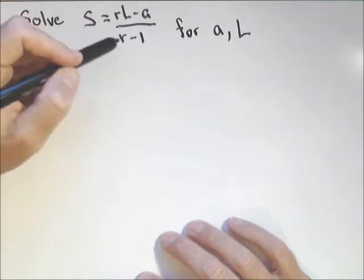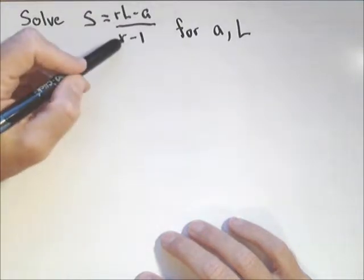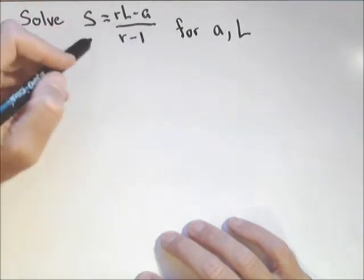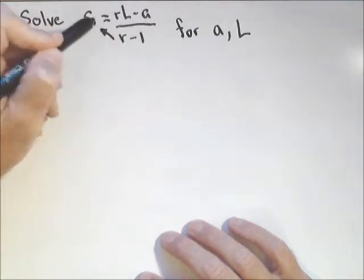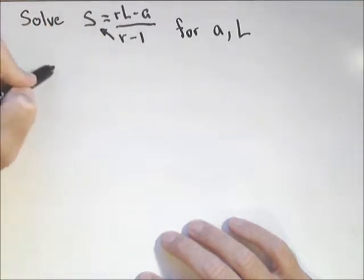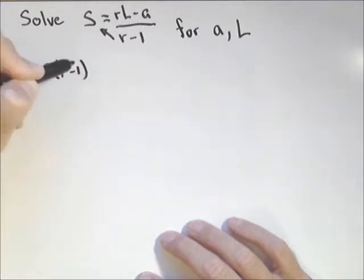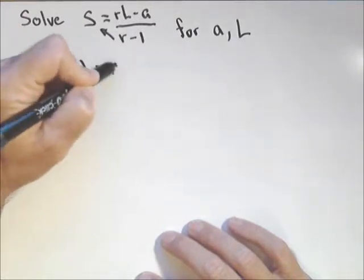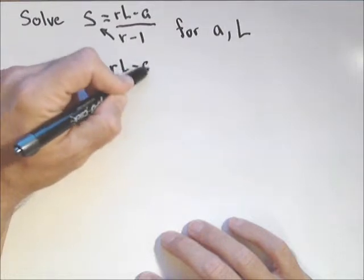If you saw that video, you saw the first step was to get rid of the denominator by multiplying both sides by r minus one. So we're gonna cross multiply that r minus one. That gives us S times r minus one equals r L minus A.